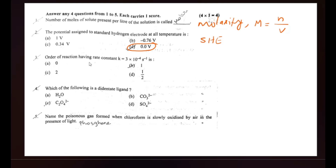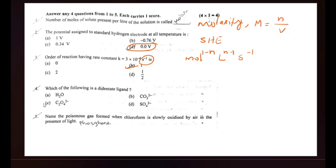Okay, then we get a question: order of reaction and rate constant k is equal to 3 into 10 to the power minus 4 second inverse. The unit of the rate constant is s⁻¹ — second inverse — which corresponds to a first-order reaction.